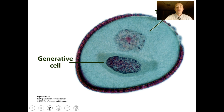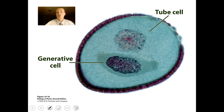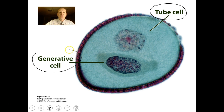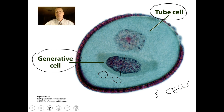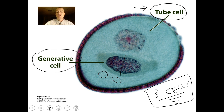This is what one of these gametophytes looks like. It has a tube cell nucleus and a generative cell nucleus. The generative cell nucleus will divide by mitosis to eventually form two sperm cells. The mature gametophyte is only three cells in size. If you remember back to bryophytes and mosses, the gametophyte was huge — made of probably millions of cells. This is only a three-cell gametophyte, representing the evolutionary reduction of the gametophyte. The tube cell will form a tube that grows down and takes the sperm cells to the ovule.